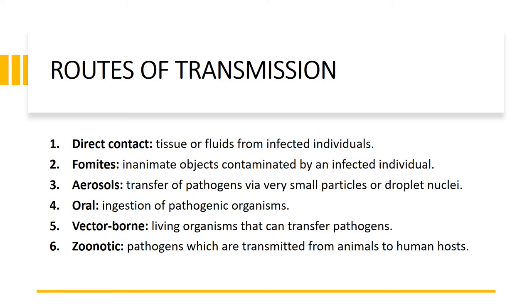We now move on to the routes of transmission. This is one area which we must reiterate during public discourses, as many members of the community are not aware of the routes of transmission. The first route is direct contact via the tissues or fluids from infected individuals, which requires the use of proper PPE in accordance with standard operating procedures. The second area is fomites — inanimate objects such as door knobs, toilet seats, and glass windows — which can serve as surfaces for transmission of biological agents and must be sanitized frequently.